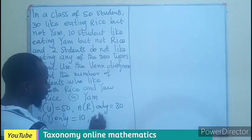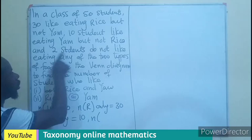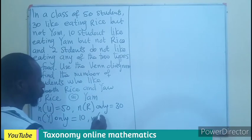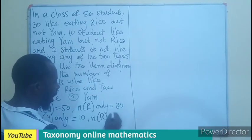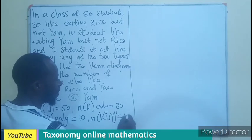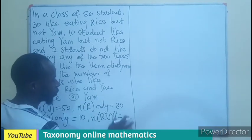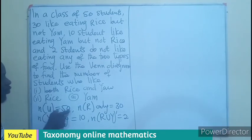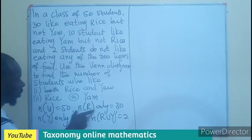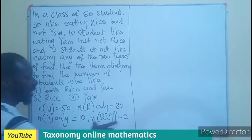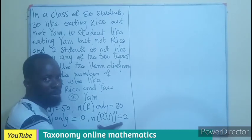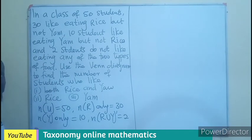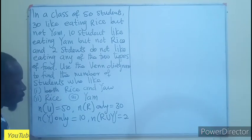Then, we go for the complement. Two do not like any of the two. So, R union Y complement will give us 2. The information given in the question is number of students, those who like rice only, those who like yam only, and those who are the complement. We need the intersection in order to complete the regions.